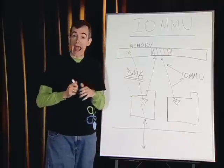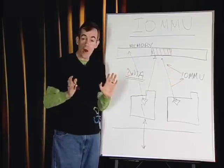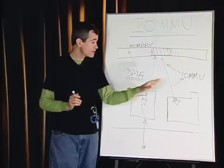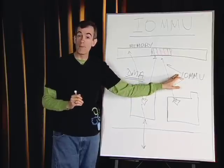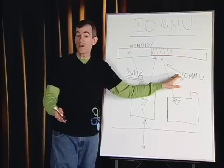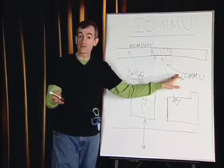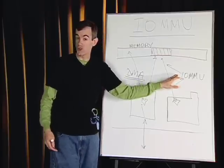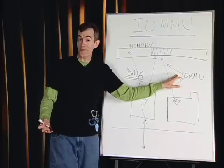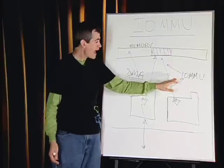The way that works is we know what the legal addresses are, and we use the IO MMU to make sure we don't have to get the CPU involved — that would be really inefficient — but it does allow us to ensure that those memory copies are all legal.